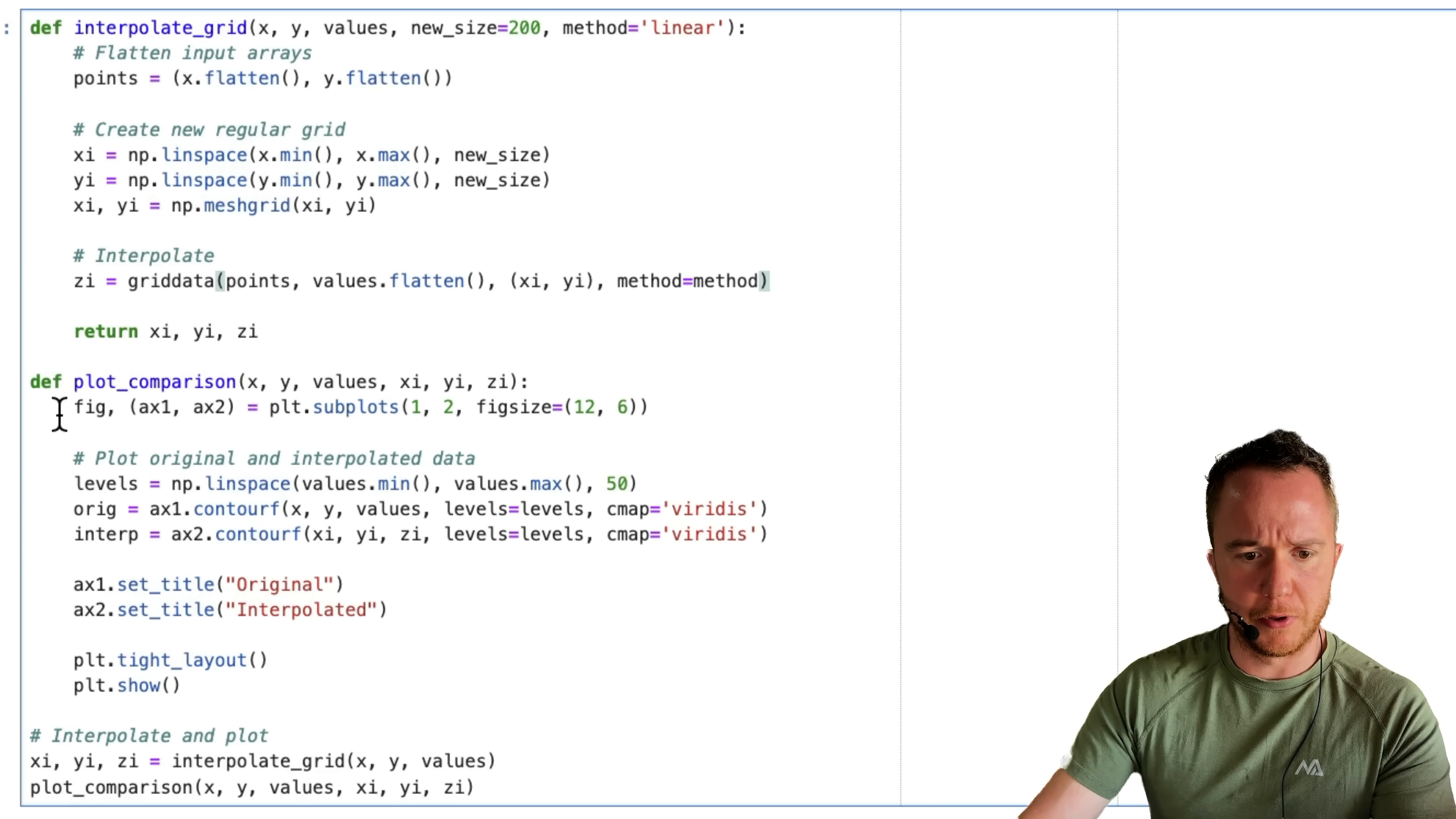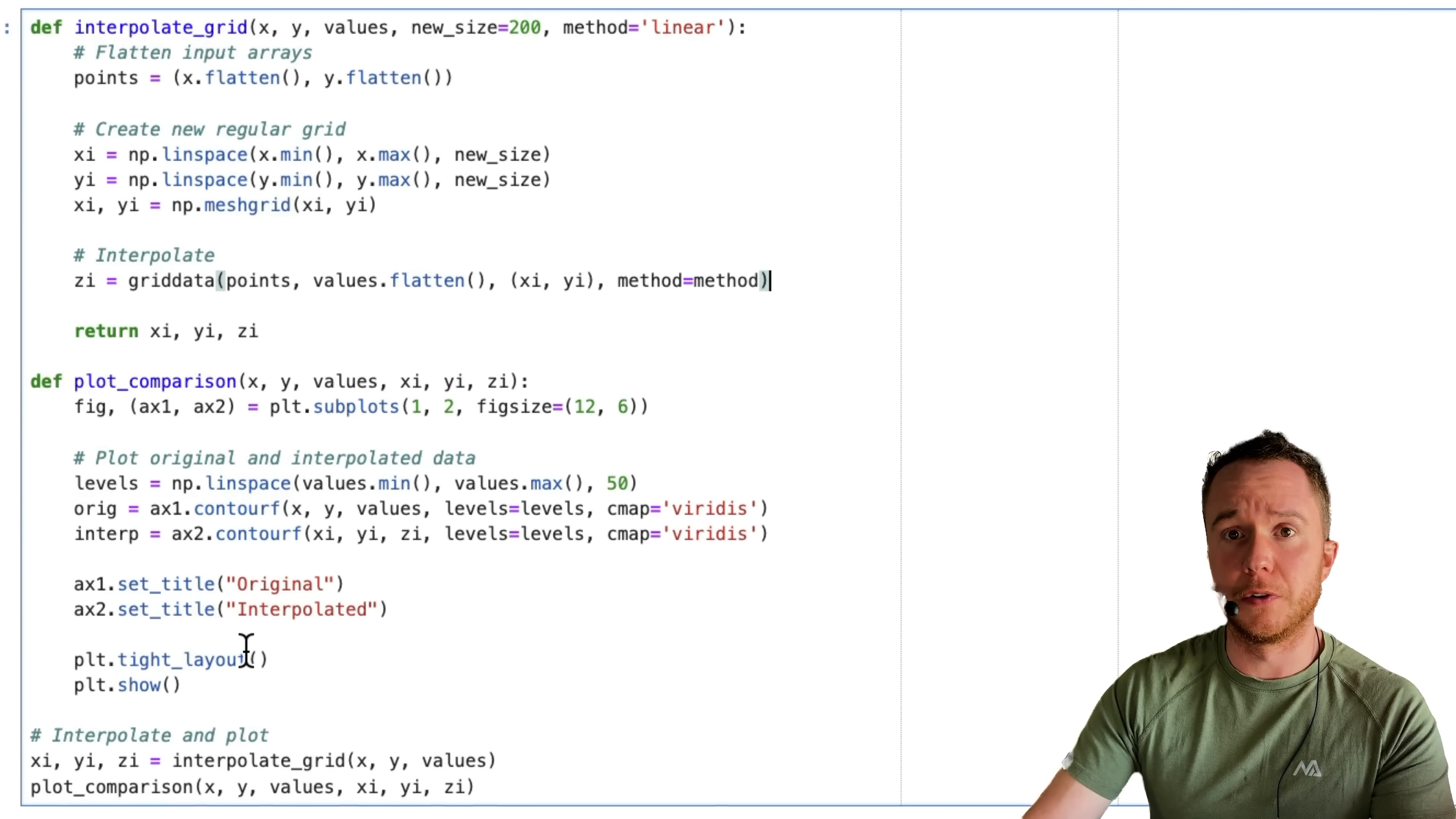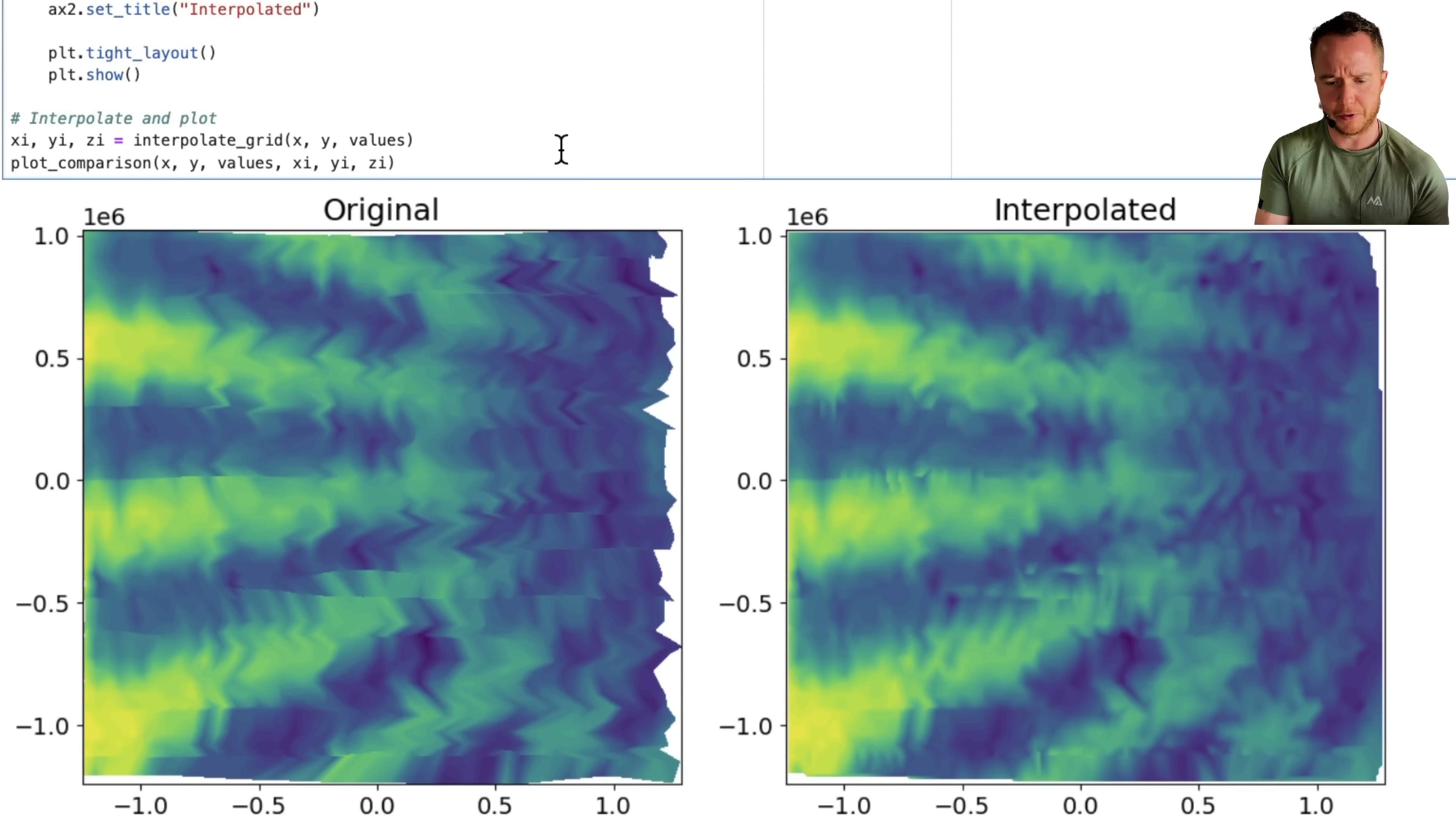Same with the plotting, everything happens a little faster here, but the result is the same. So we have the original on the left that still shows some artifacts, and the interpolated values on the right. If this was a production code, I would just delete everything that came before it to simplify the code, to make it a nice short script that does everything that we need it to do in as few lines as possible.